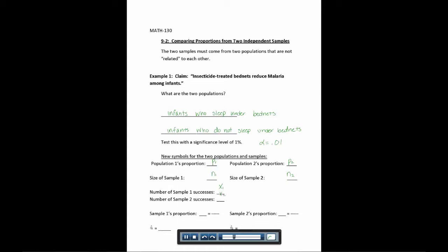Now if we get the sample proportion, which we call P-hat, so it would be P-hat 1. For sample 1, we would take X1 divided by N1. And for sample 2, we'd take P-hat 2, which would be X2 over N2.